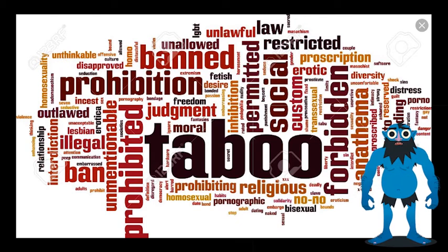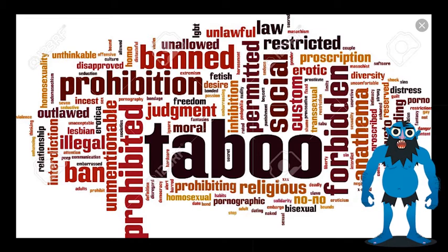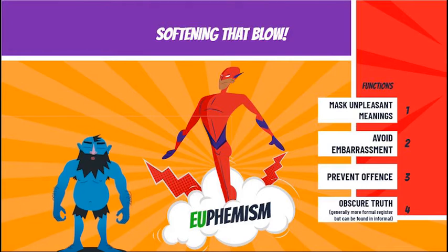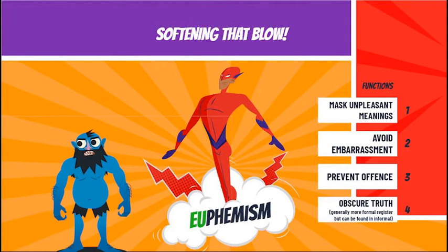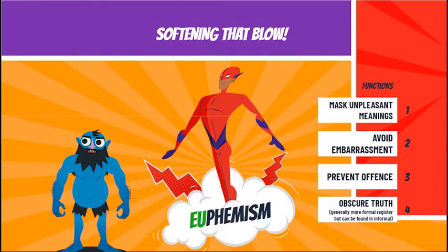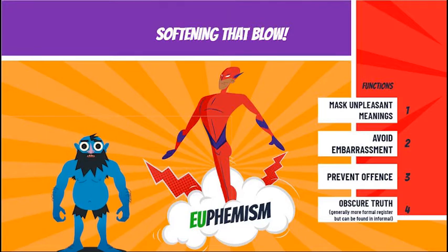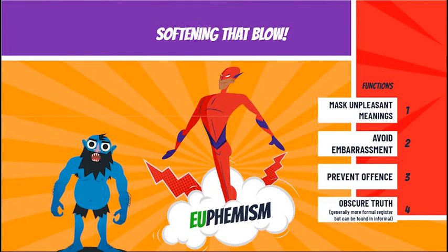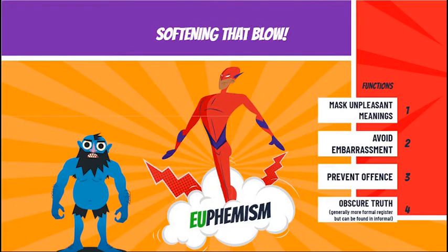Now, in an informal context it might seem absolutely fine to talk about all of those things, but we still have to listen to and adhere to the expectations of society. What we can do is broach some of these taboo topics through euphemisms. As you know, the EU prefix means good, and therefore it's the good way of saying something. These are generally found a lot in formal language as you've already looked at - the way businesses soften the blow when they let people go using euphemistic jargon. However, that doesn't stop it from happening in informal language. The main function of euphemisms boils down to masking an unpleasant literal meaning.